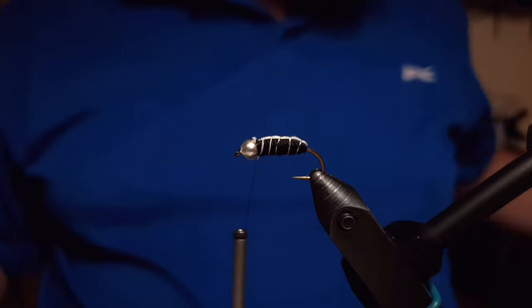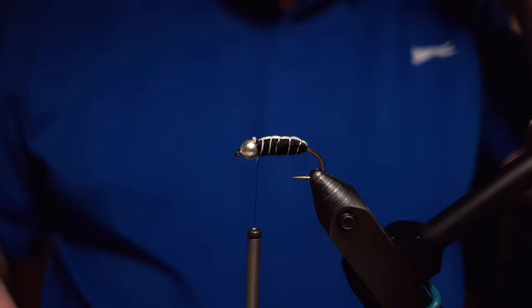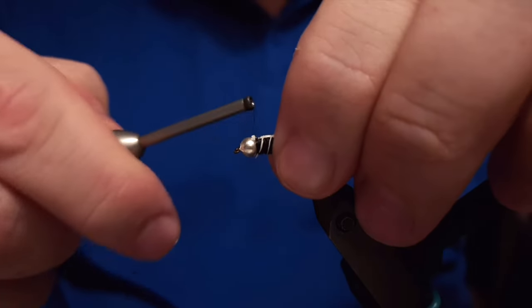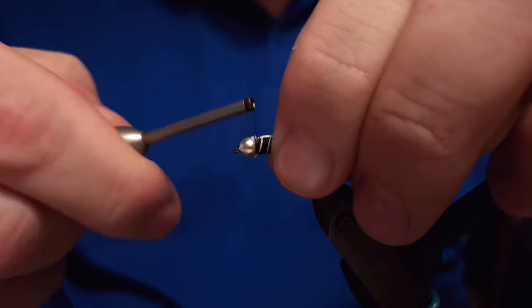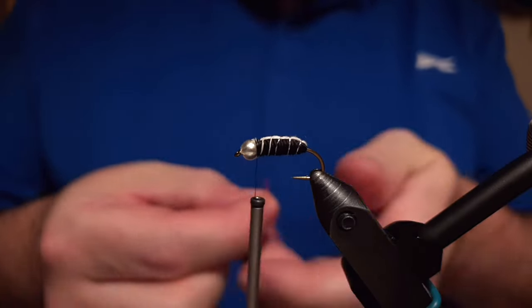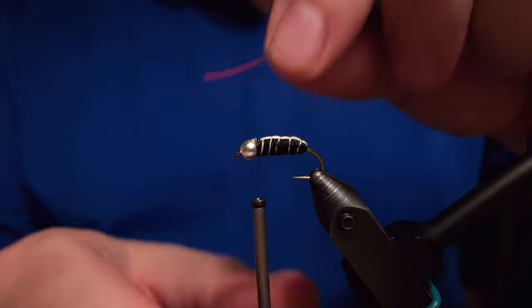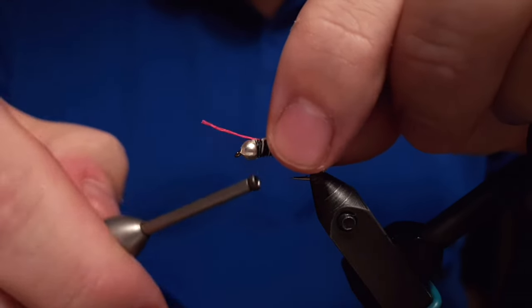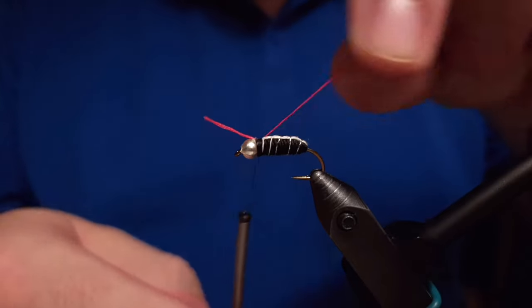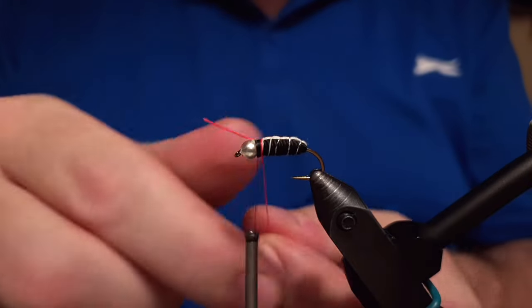The last step of the fly is that you're going to build up a little platform for the hair. Then we're going to take a red hackle and form a tiny little neck with it. It's not big, just to give it a little hint of a hot spot.